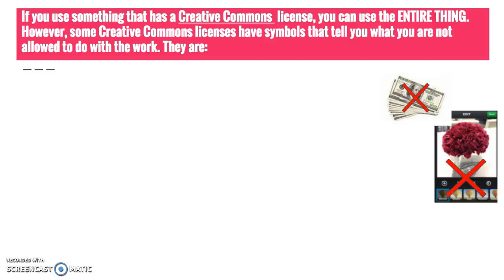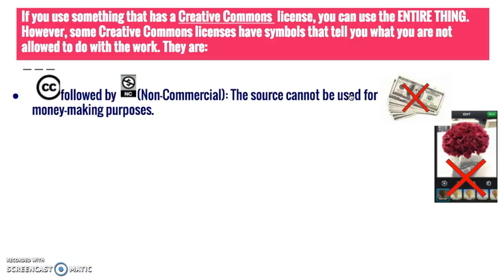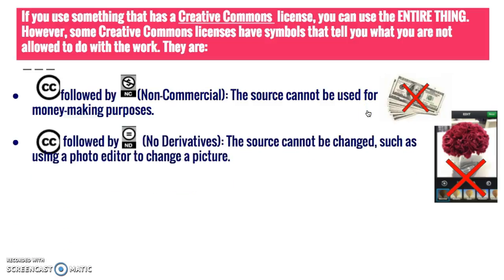If you use something that has a Creative Commons license, you can use the entire thing. However, some Creative Commons licenses have symbols that tell you what you are not allowed to do with the work. CC followed by NC (non-commercial): the source cannot be used for money-making purposes. CC followed by ND (no derivatives): the source cannot be changed, such as using a photo editor to change a picture.